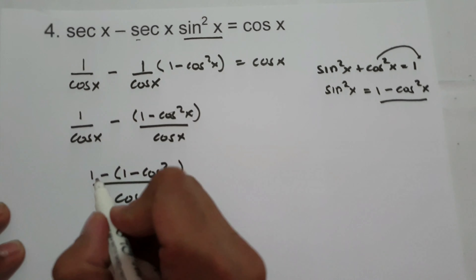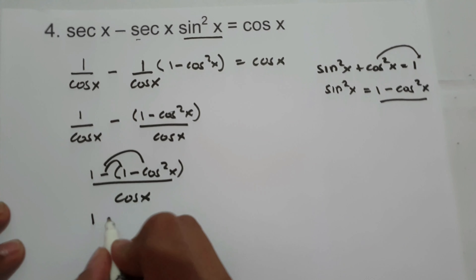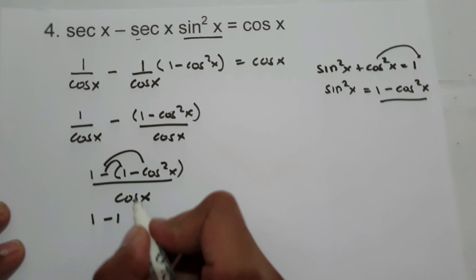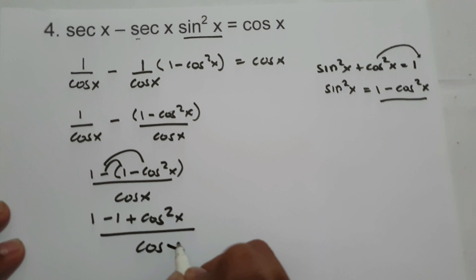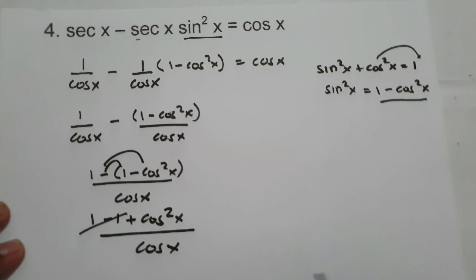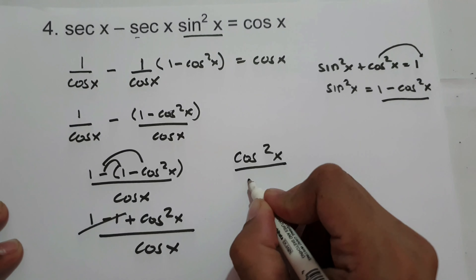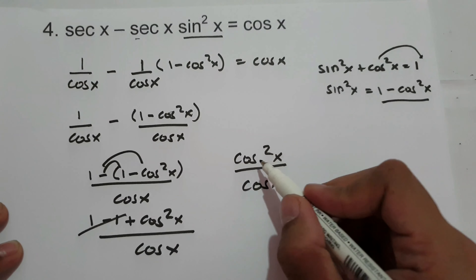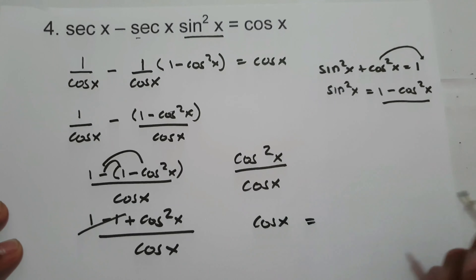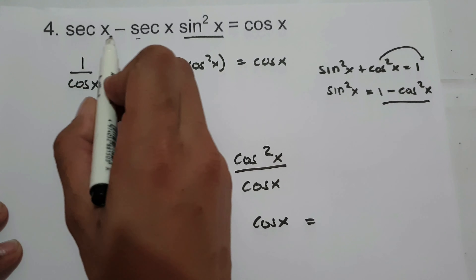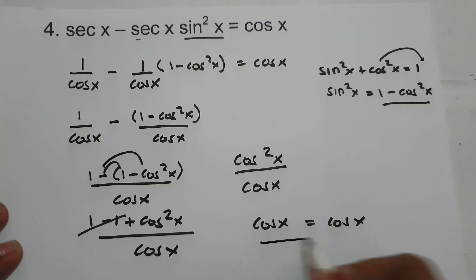So we have cosine squared x over cosine x. So 1 minus 1, that is 0. So let us have cosine squared x over cosine x, that is cosine x. So therefore, we've proved that secant x minus secant x times sine squared x is equal to cosine x.